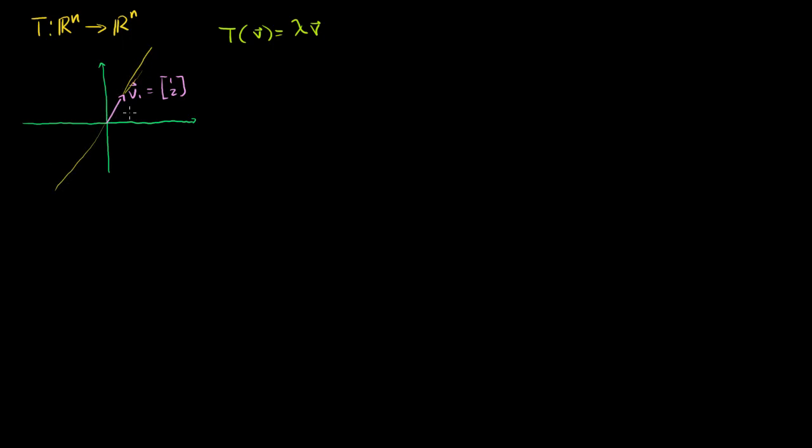And I had the transformation that flipped across this line. So if you call that line L, T was the transformation from R2 to R2 that flipped vectors across this line. So if you remember that transformation, if I had some random vector x, then the transformation of x looks something like this. So it was just flipped across that line.